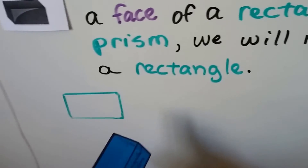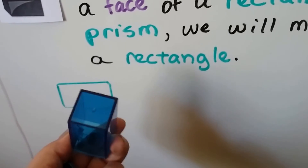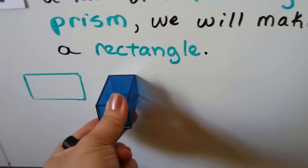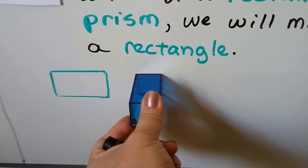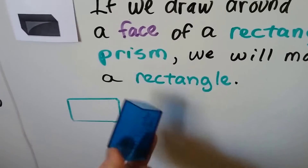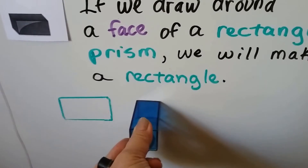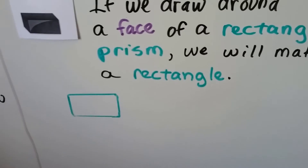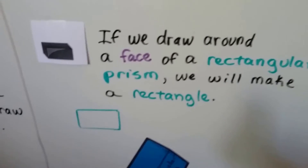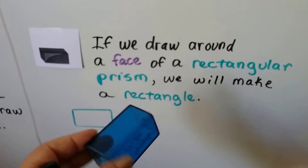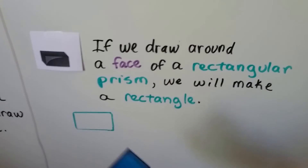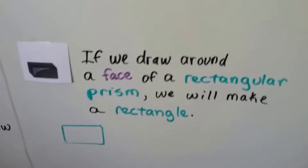What would have happened if I drew around this other face? It wouldn't have made a rectangle — it would have made a square if I put it on this face. Because a face is any flat surface. Any surface that you can lay the shape down on and it won't roll because it's got edges — that's a face.